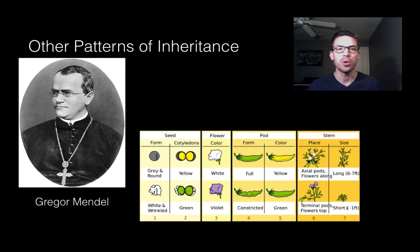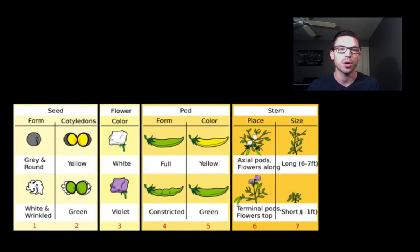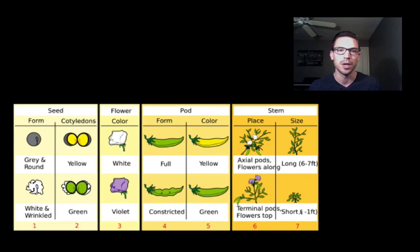At this point you should have a pretty good understanding of Mendelian genetics, which was the foundations of genetics that Gregor Mendel discovered while breeding pea plants. Mendel looked at seven different traits of pea plants and crossed them to see what happens. By doing this, he developed his law of segregation, the law of independent assortment, and his principle of complete dominance.